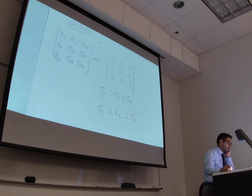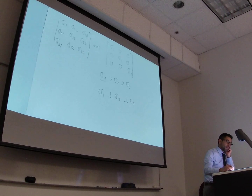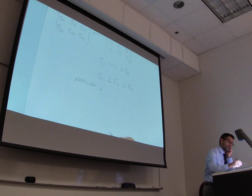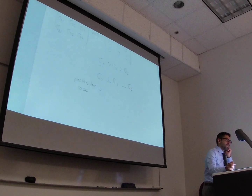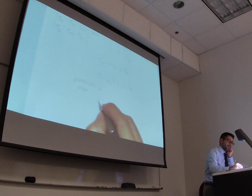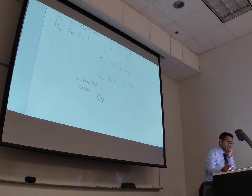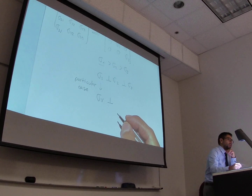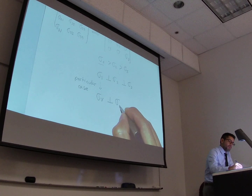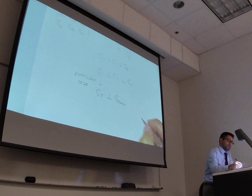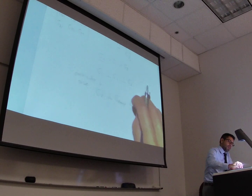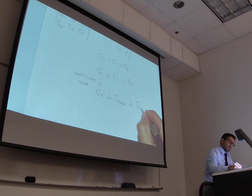That's going to be something very useful. For example, let's assume a particular case — what we wrote before is the general case, but in a particular case, let's say the largest stress is the vertical stress. So if the maximum principal stress is the vertical stress, that automatically implies that the other two principal stresses are going to be horizontal. We're going to call those the maximum horizontal stress, sigma h max, and the minimum horizontal stress, sigma h min.